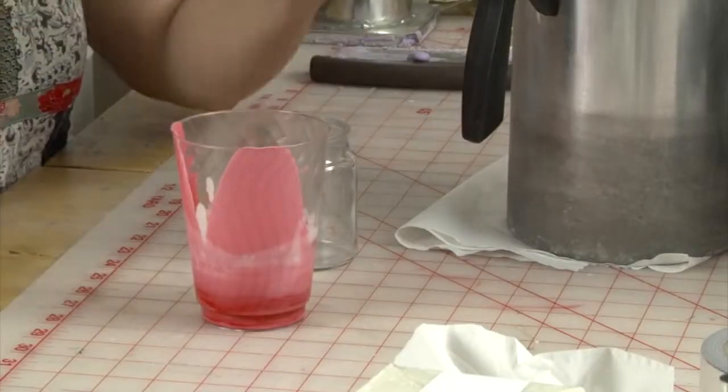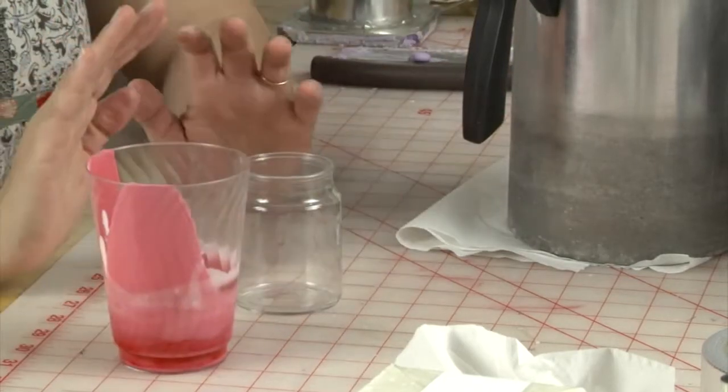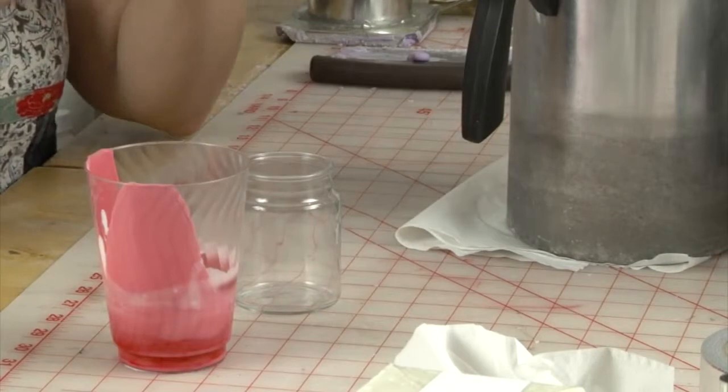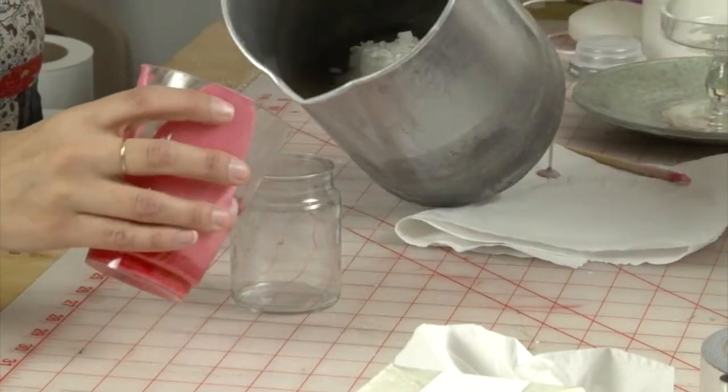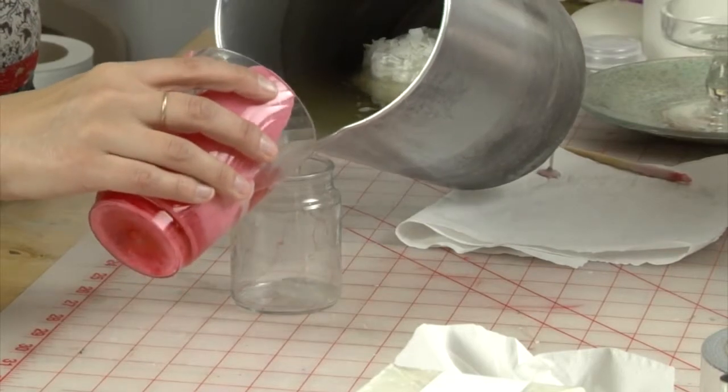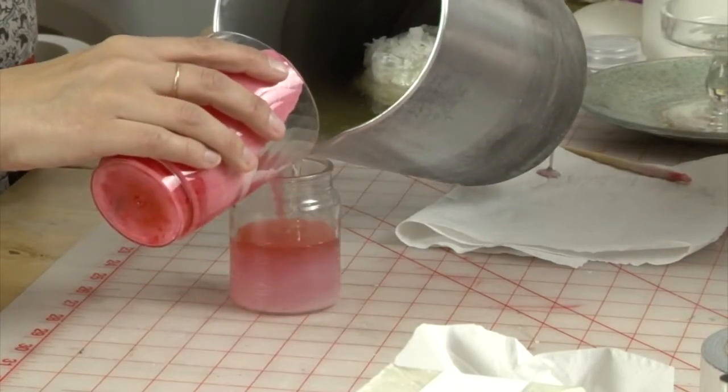And I'm going to pour it at the same time that I pour the white, trying not to move it as I go, so that they end up next to each other instead of mixing into each other. So I'm going to pour them both at the same time, and hopefully you can see the swirl kind of happening.